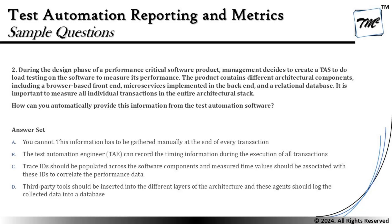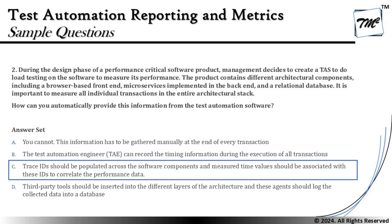With that, we can easily conclude the right answer to this question is C — trace IDs should be populated across the software components and measured time values should be associated with these IDs to correlate the performance data, which solves the purpose of reporting the same.